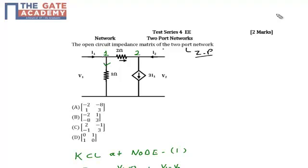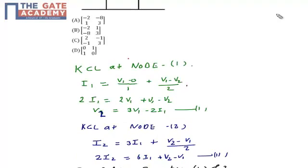In node 1, the sum of incoming current is I1 and the outgoing currents are 2: one is across 1 ohm resistor and another one is across 2 ohm resistor.